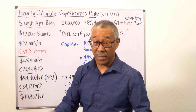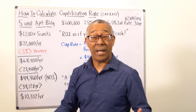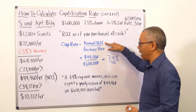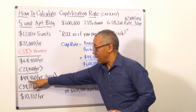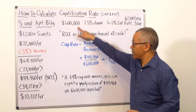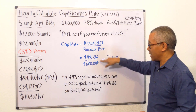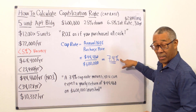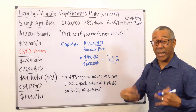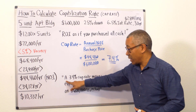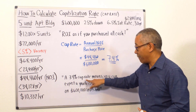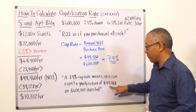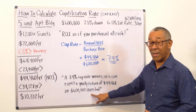Now we have the purchase price and the net operating income, so we can do the calculation for the cap rate. Cap rate equals annual NOI of $44,460 divided by the purchase price of $600,000 — that's a 7.4% cap rate. Here's what that means: a 7.4 cap rate means you can expect a yearly return of $44,460 on $600,000 invested.